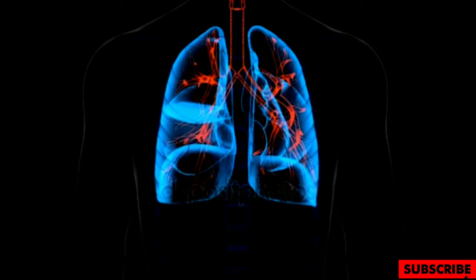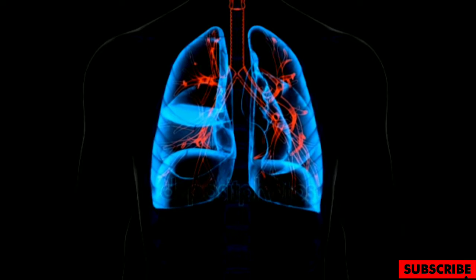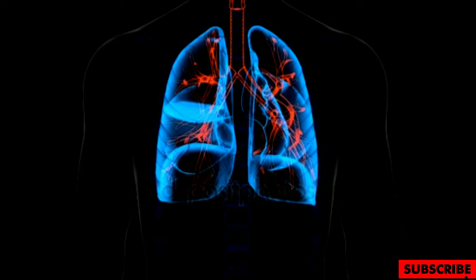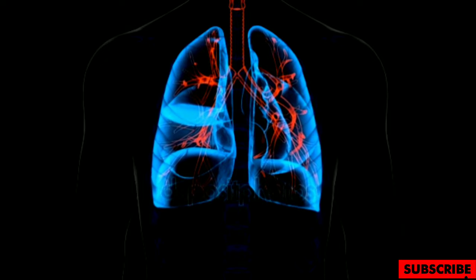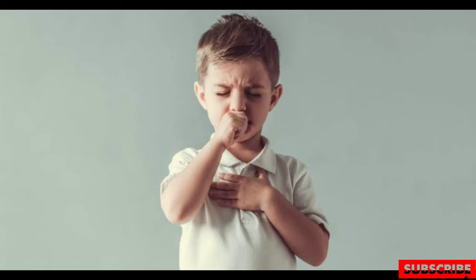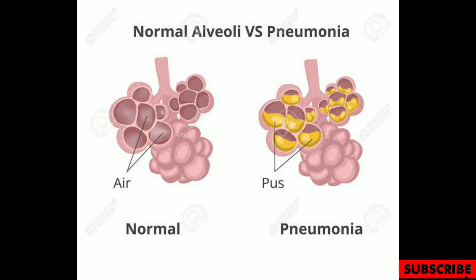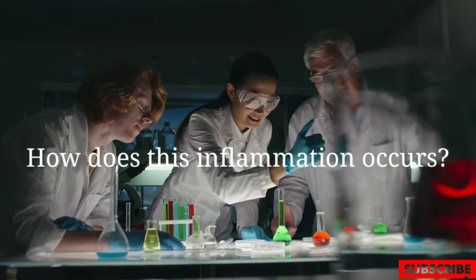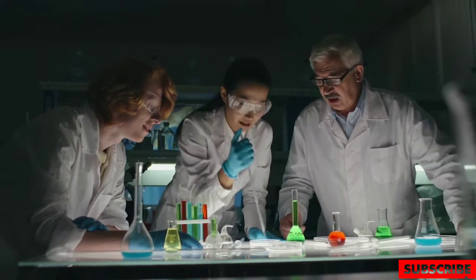Pneumonia is a lung infection which falls under respiratory tract infections. The organs involved in the respiratory system include the nose, pharynx, larynx, trachea, bronchus, and alveoli. Pneumonia is the inflammation of the alveoli.